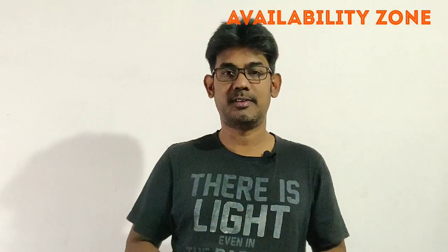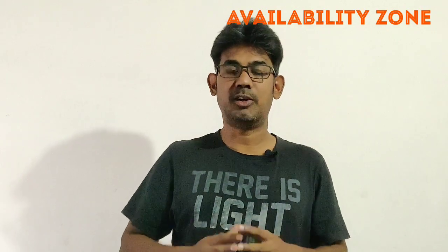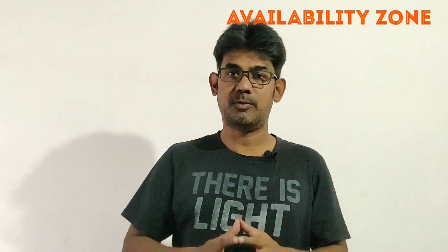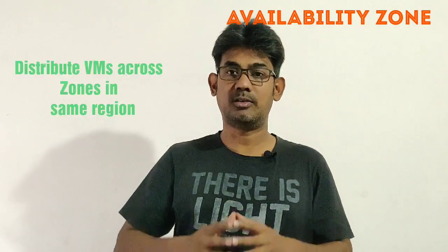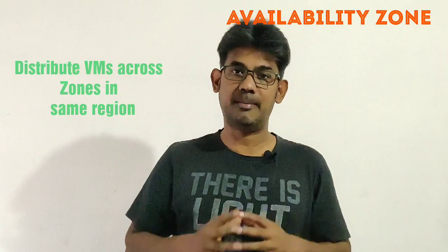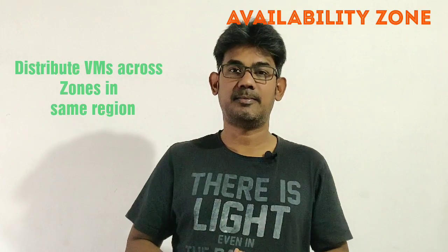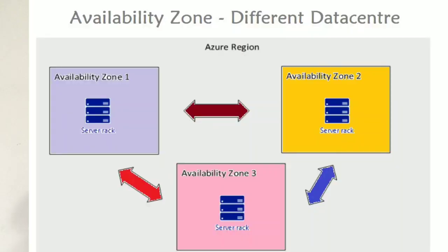Availability Zone is a high availability solution offered by Microsoft. Here you can deploy your VMs across zones within the same region. This diagram explains how VMs are distributed across availability zones — if one zone goes down, the other will take care of it.